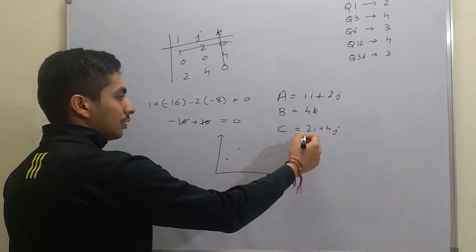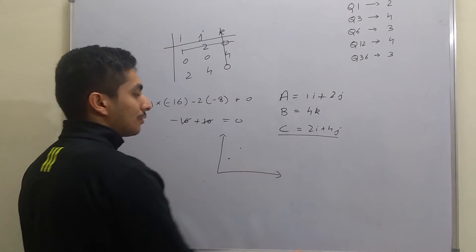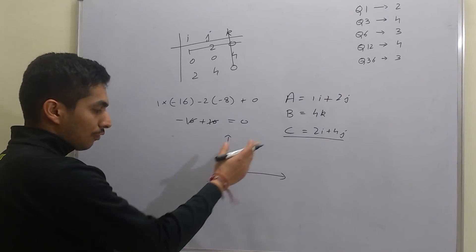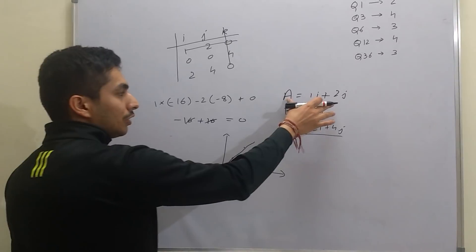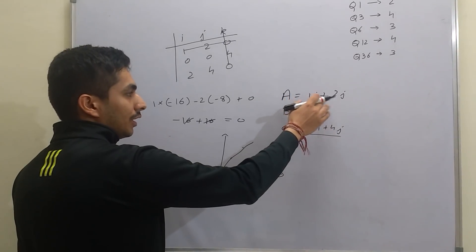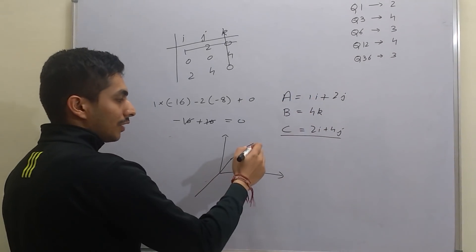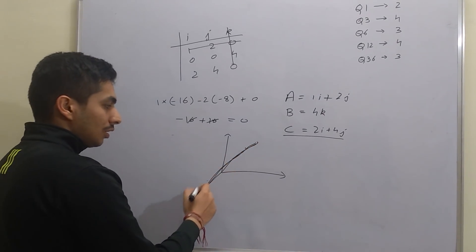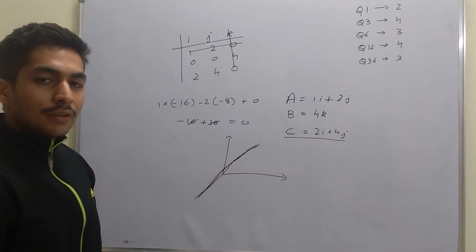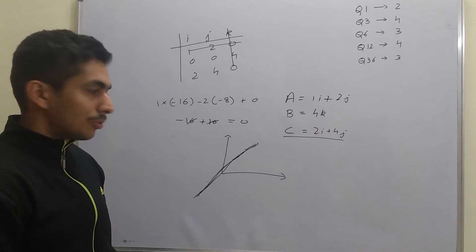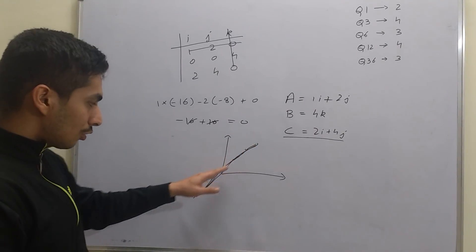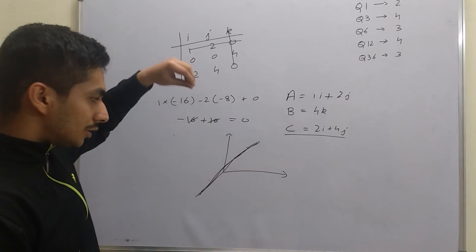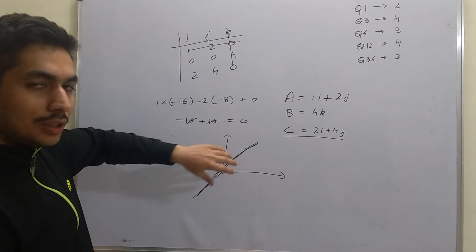If you draw the vector for 2i + 4j, it follows a certain trajectory. And if you draw the vector for A, that vector also follows the same trajectory. That means we would not have a 3D structure because two vectors are following the same trajectory. The third vector B is along the Z axis, coming out of the plane.